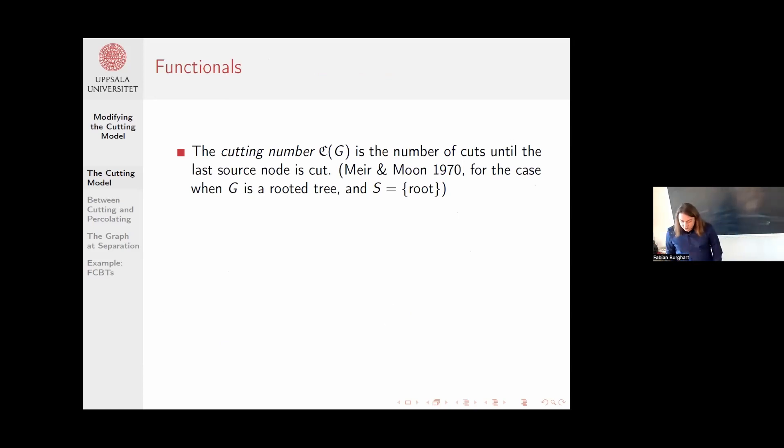Now that I have this process, I can define some functionals on it. The first one is very classical. The cutting number is just how many steps this process runs, so how many cuts do I need until the last cut removes the final vertex? In the special case when I work with a rooted tree, this goes back to a paper by Meir and Moon from 1970, where they just picked the root of the tree to be the one source.